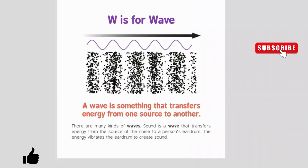W is for wave. A wave is something that transfers energy from one source to another. There are many kinds of waves. Sound is a wave that transfers energy from the source of the noise to a person's eardrum. The energy vibrates the eardrum to create sound.